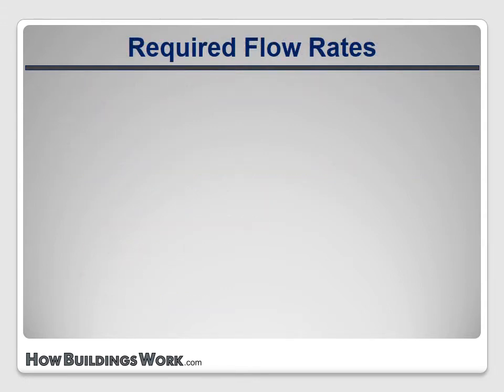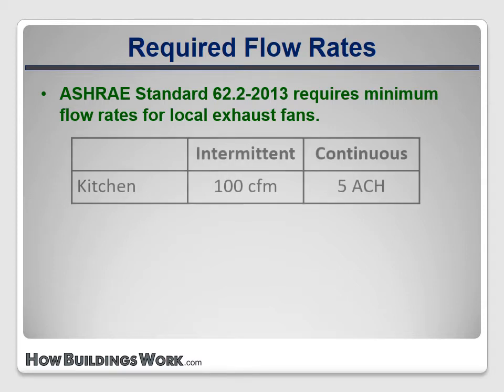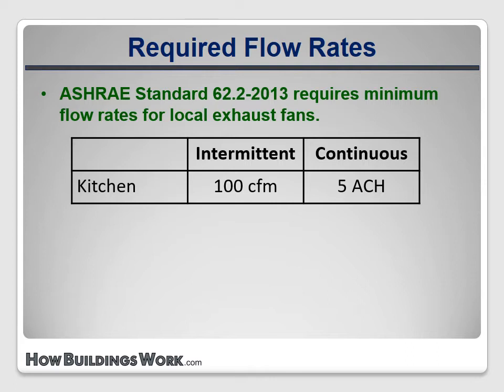ASHRAE standard 62.2 2013 includes required minimum flow rates for different fan types. Logically, the required rates are higher for intermittent systems than for systems that run continuously. For kitchens, intermittent systems like range hoods must provide at least 100 cubic feet per minute of exhaust. Continuous systems must provide at least five air changes per hour in the kitchen.